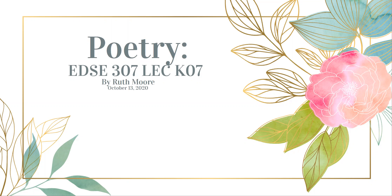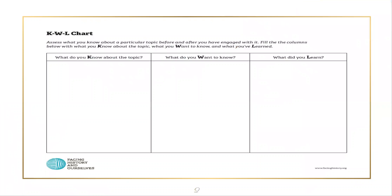On the next slide we are going to look at a chart. This is called a KWL chart. I want you to take a moment to pause the video so you can write down some things for the first column: what do you already know about poetry? Remember, there are no wrong answers and no one is going to judge you based on what you write down. I'll give you a moment to pause here.